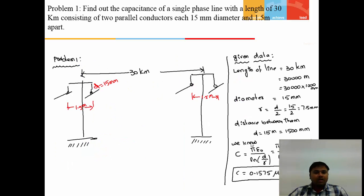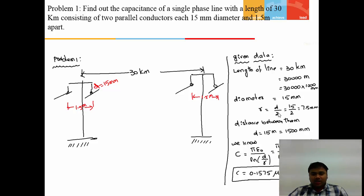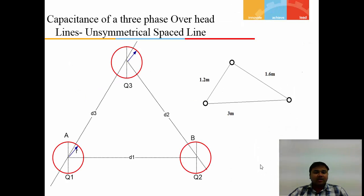A sample problem: find the capacitance of a single-phase line of 30 km length with two parallel conductors of 15 mm diameter and 1.5 m apart. Length = 30,000 m; radius r = 15/2 = 7.5 mm; distance D = 1.5 m = 1500 mm. Using C = π ε₀ / ln(D/r) with ε₀ = 8.85 × 10⁻¹² and ln(1500/7.5), the final capacitance works out to approximately 0.1575 microfarads.